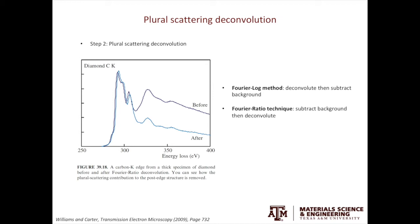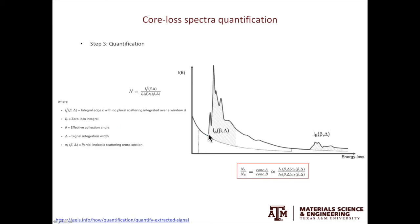The example on the left is after background removal. The dark line shows the signal before the deconvolution. And the light blue one shows after the deconvolution, where the plural scattering contribution is removed. After the background removal and the plural scattering deconvolution, we're ready for EELS quantification.